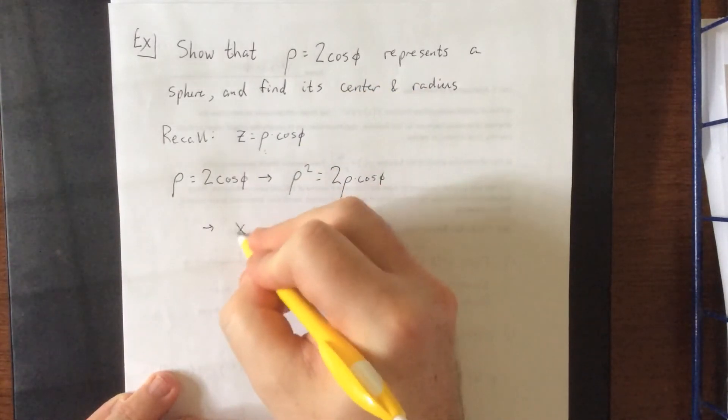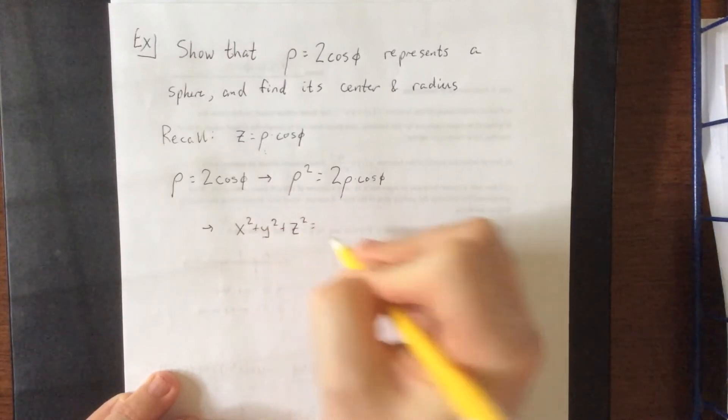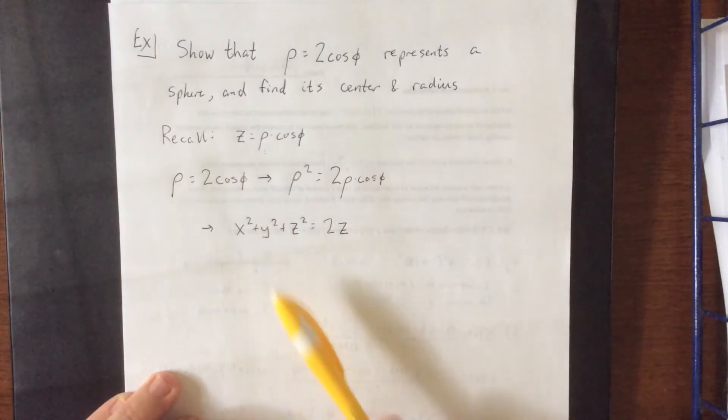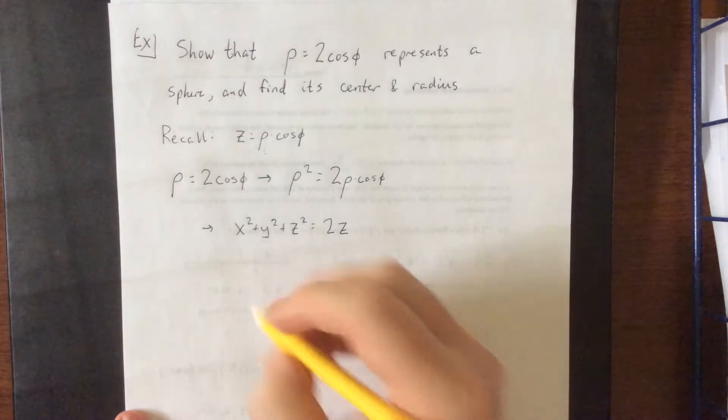So we can say that this is now x squared plus y squared plus z squared, and that's going to be equal to 2 times z. Now the fact that we have an x squared plus y squared plus z squared here is pretty indicative of a sphere, but the fact that we have a 2z over on this side indicates to me that the center is not going to be at the origin.